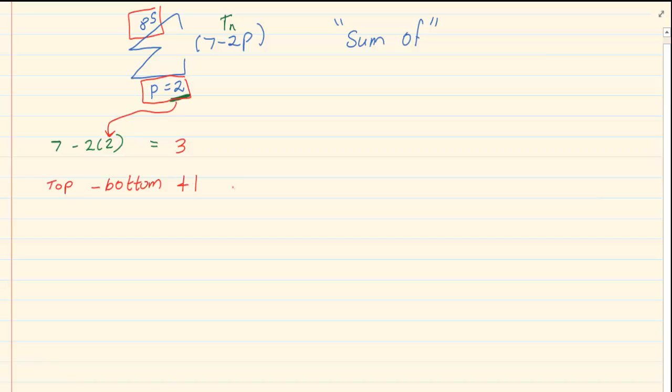So in this case, the total number of n is going to equal 85 minus 2 plus 1. So we would have that n is equal to 84. Right, so to calculate n, we say top minus bottom plus 1.